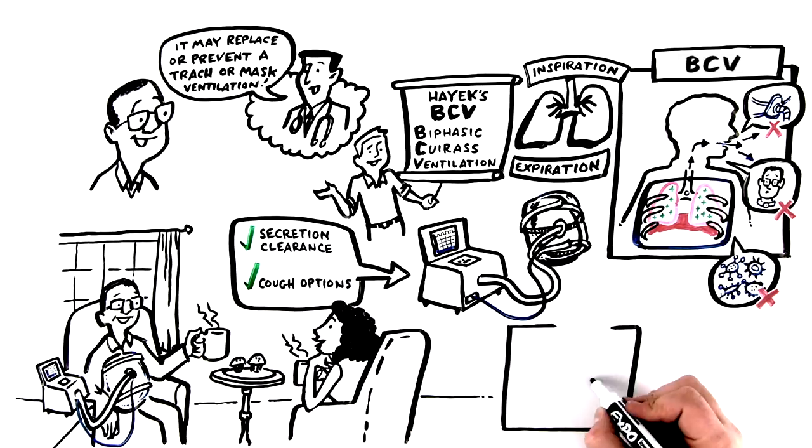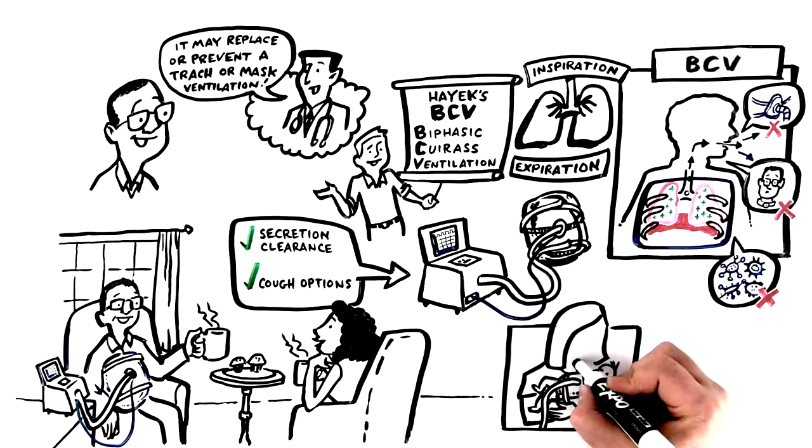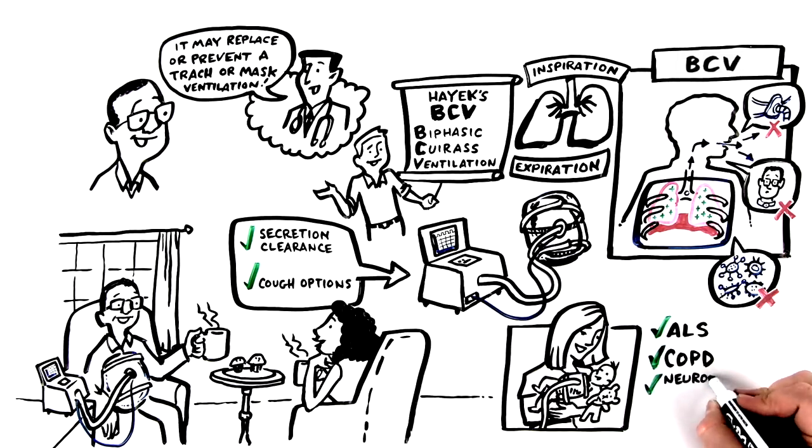HIAC's BCV can be used by babies and adults and nearly everyone in between for so many conditions, from ALS and COPD to neuromuscular patients and a variety of other respiratory conditions.